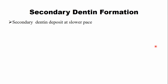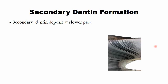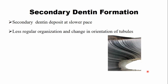Secondary dentine is deposited when root formation is complete and is deposited at a slower pace. This dentine near the pulp chamber after the completion of root formation is the secondary dentine. In the secondary dentine, the tubules are less regular and there is a change in orientation of the tubules. This change in orientation occurs because the odontoblast processes travel from a larger surface area to a smaller surface area, causing crowding of the odontoblasts and death of some odontoblasts as well.